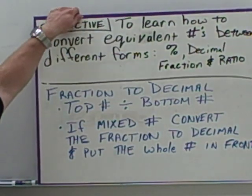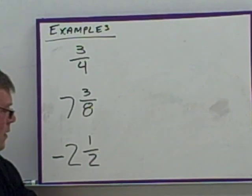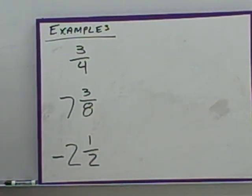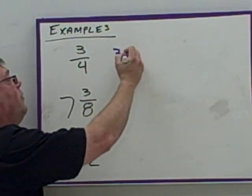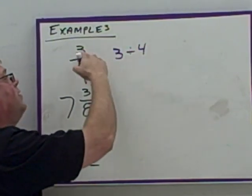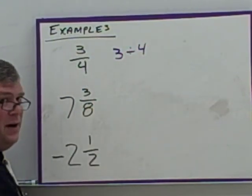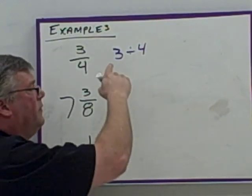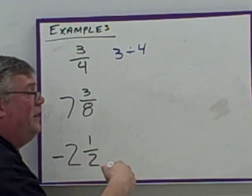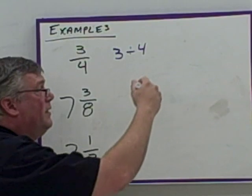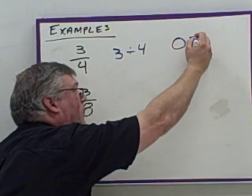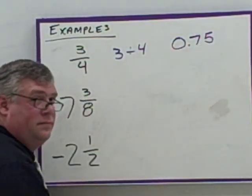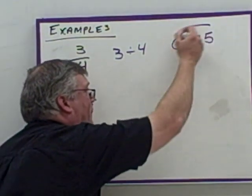For example, here I've got 3 fourths. It's going to be straightforward: 3 divided by 4, top divided by bottom. When you divide the top by the bottom in your calculator — I'm not asking you to do long division — 3 divided by 4 gives you 0.75, and that's your answer.